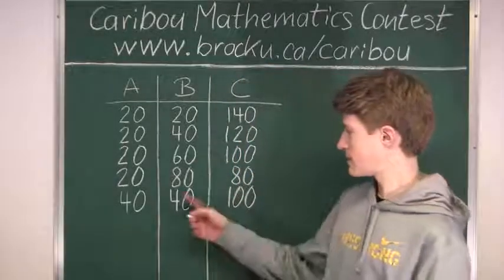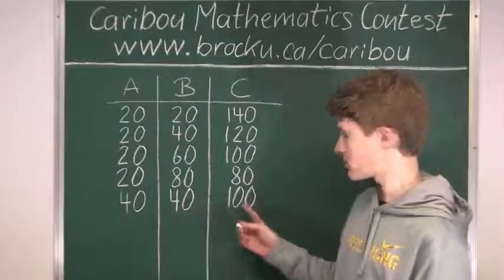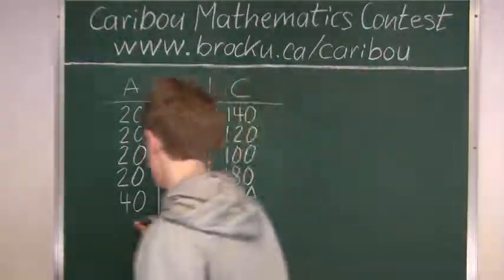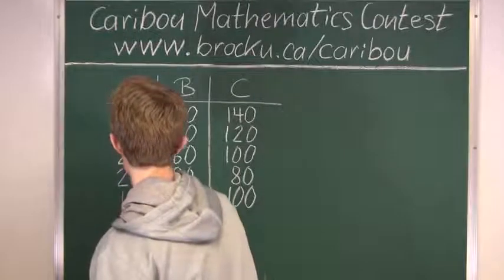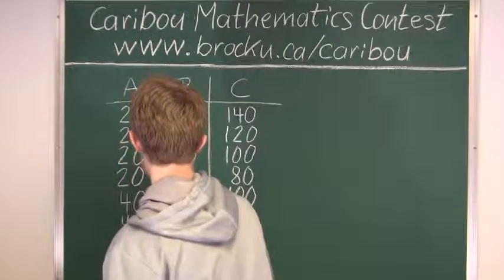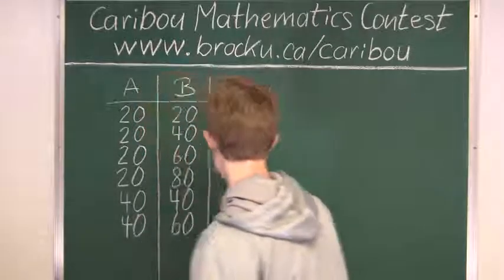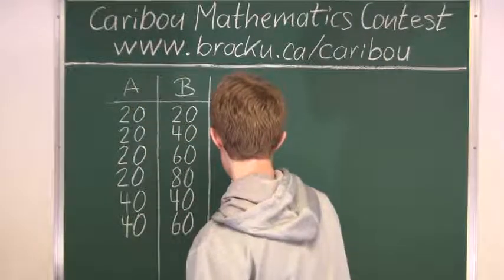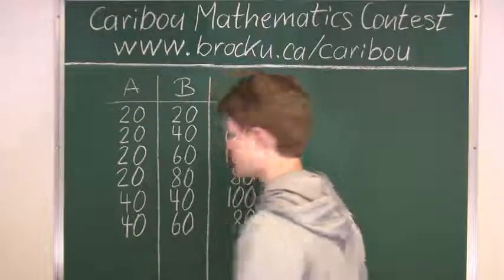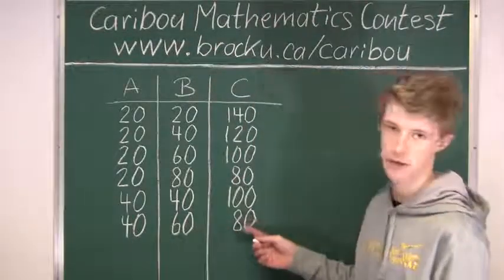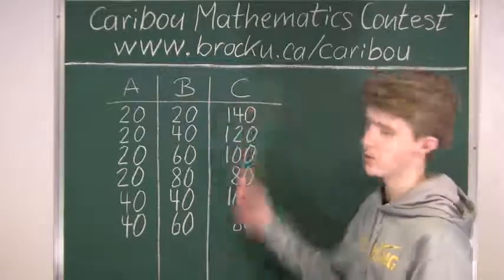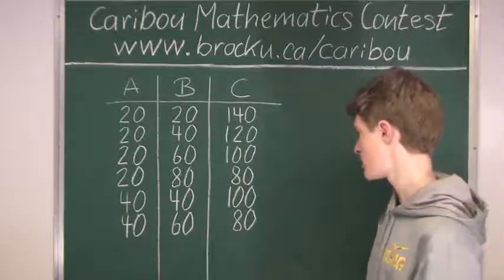And then we will do 180 minus 80, which is 100. Okay, so now we can see that we can add 20 here and subtract 20. Now we can see that we can't go any further, because if we add 20 here and subtract 20 here, then B will be greater than C, and we know that that cannot happen.